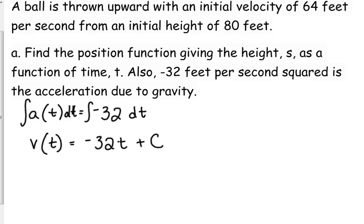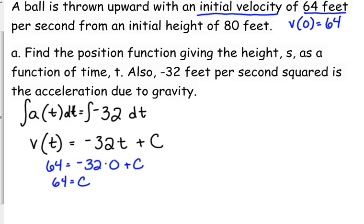That means we need to solve for it. Well, they gave us a piece of information about velocity. They said the initial velocity was 64 feet per second. So that means V of 0 is equal to 64. Initial means time is 0. 64, so 64 is equal to negative 32 times 0 plus C. So that just says 64 is our C.